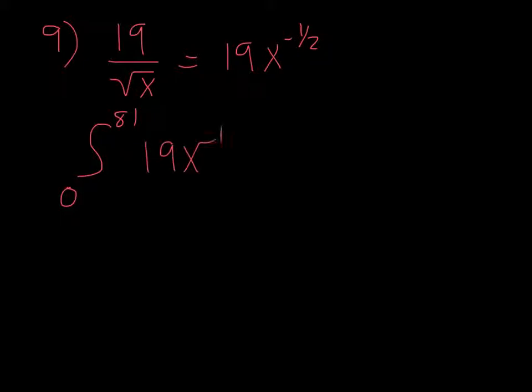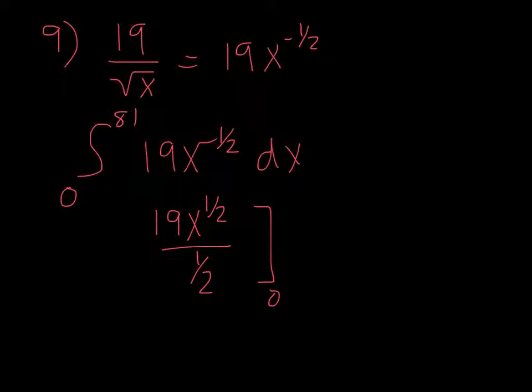Number 9, a company's marginal cost function is 19 over square root of x, which of course is 19x^(-1/2), where x is the number of units. Find the total cost of the first 81 units. So, this one we can't use our calculator. It'll give us an error. So we're going to do 0 to 81 of 19x^(-1/2) dx. So if I add 1, it's going to be 19x^(1/2) over 1/2 evaluated from 0 to 81.